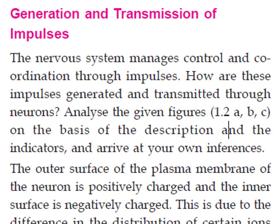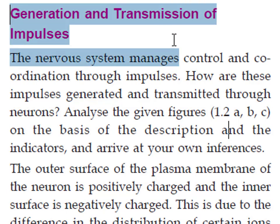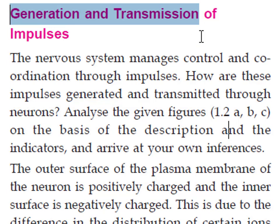Now we are moving on to the generation and transmission of impulses. How are the impulses transmitted through the brain? Where are the receptors and suitable impulses within the brain? That means: Generation and Transmission of Impulses.